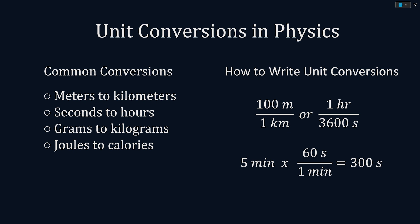When writing unit conversions, it's important to know how to write your equations. Unit factors are normally written as fractions equal to 1. For example, 100 meters over 1 kilometer, or 1 hour over 3,600 seconds. The main idea in converting units is to multiply by a fraction that cancels out the units that you were given and leaves you with the units that you want.